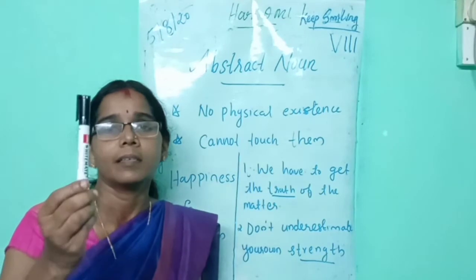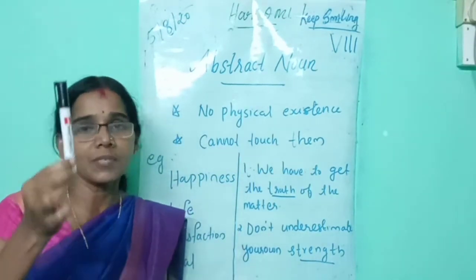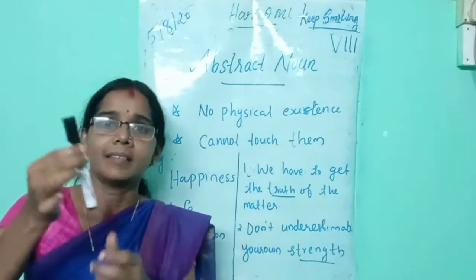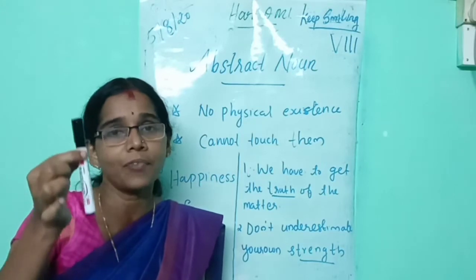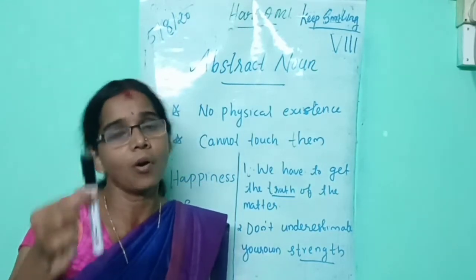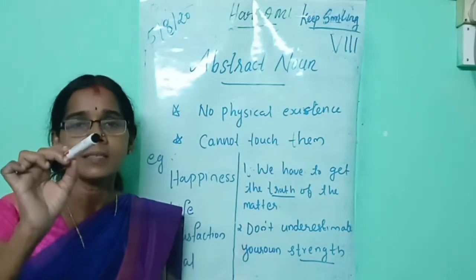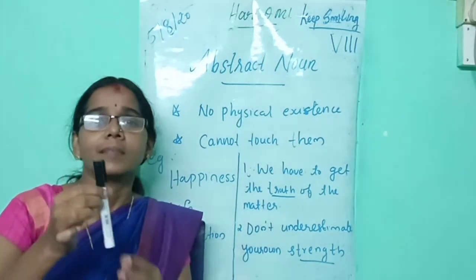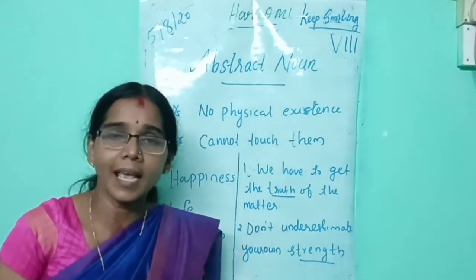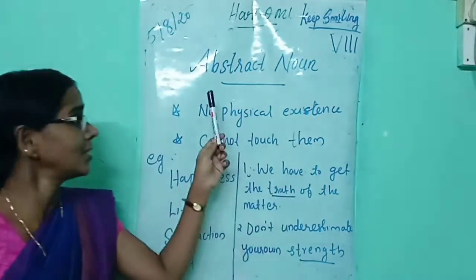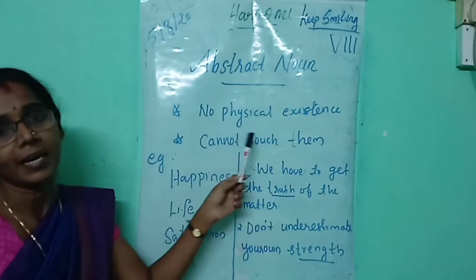For example, this is a marker. It has physical existence, so I can touch it. A noun is the name of a person, place, animal, thing, feeling or an idea. This marker has physical existence — I can touch it. But in the case of an abstract noun, it has no physical existence. We cannot touch them.